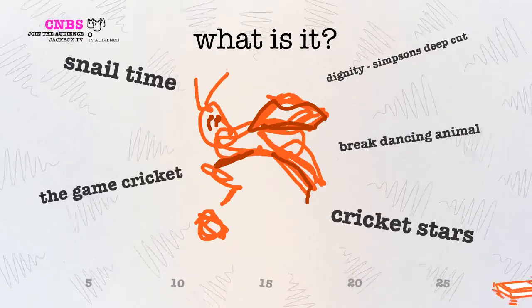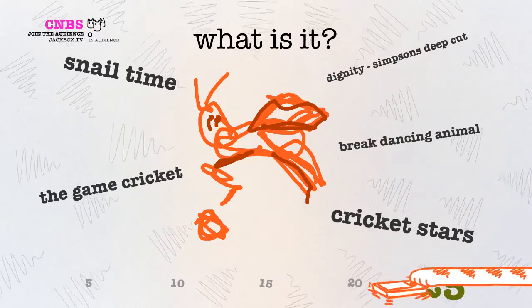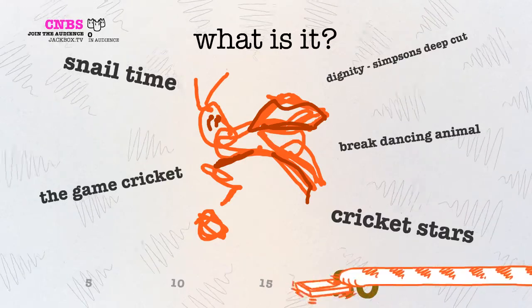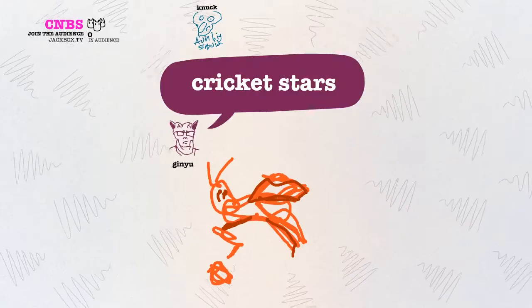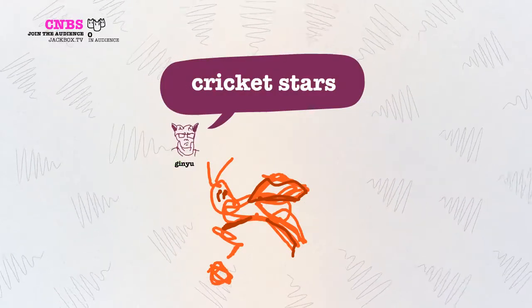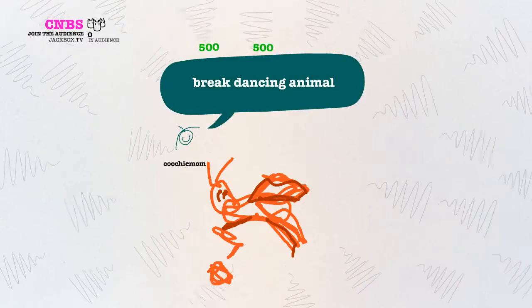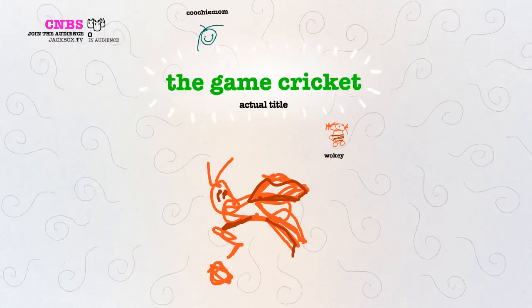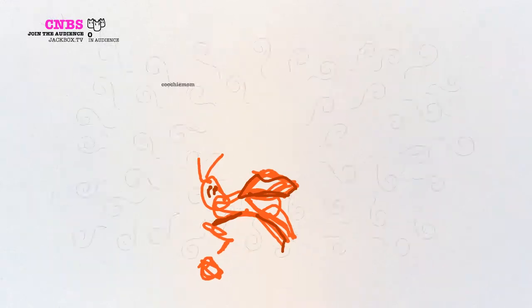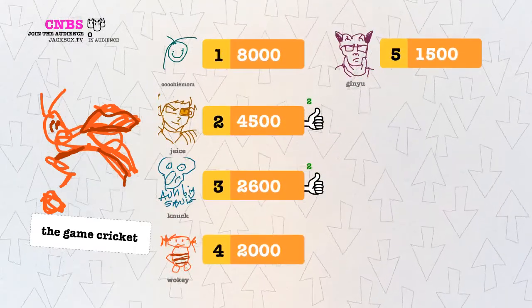Dignity, substance, deep cut? What the fuck is that? The game crickets nail time break dancing animal in cricket stores? Okay, so let me explain myself. This was a cricket playing cricket. That's what it was supposed to look like. Boy, I don't know what cricket looks like. I thought cricket was badminton or something. I forgot what cricket was. Y'all didn't like my dignity?